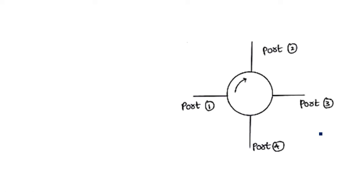Hi everyone. In this video I am going to explain about the circulator. A circulator is a third type of ferrite device, also working with the principle of ferrite magnetic material. This is the waveguide and a symbolic representation of the circulator with four ports. Generally, circulators are available in multi-port configurations — three port, four port — with a minimum of three ports required.